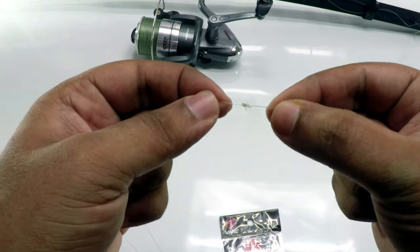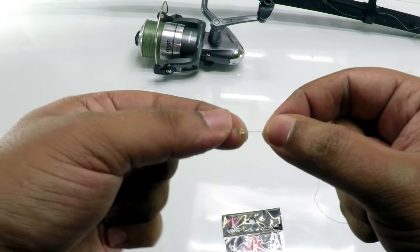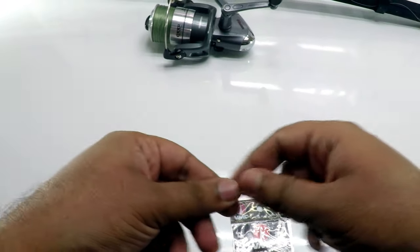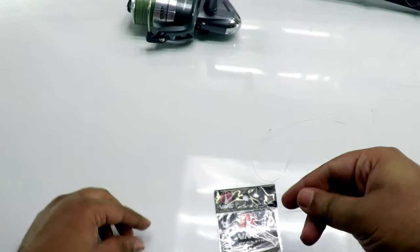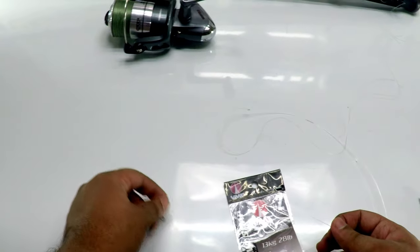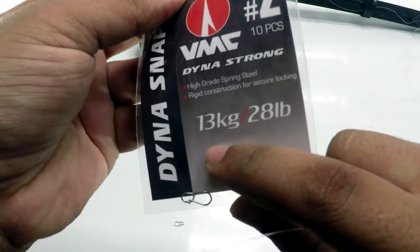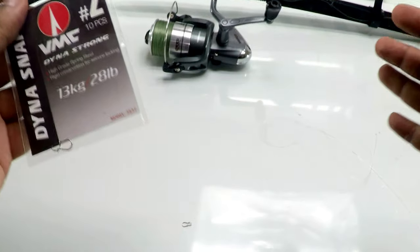Once I've joined both my shock leader and main line with a blood knot, I would put a dynasnap at the end. These dynasnaps are from VMC and VMC makes one of the best. Size number two can hold 13kg.